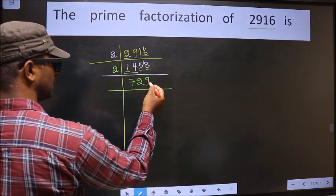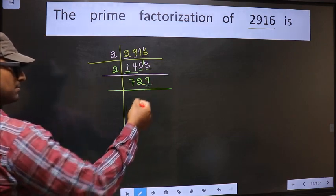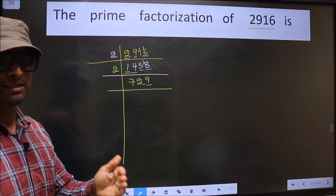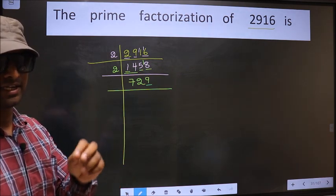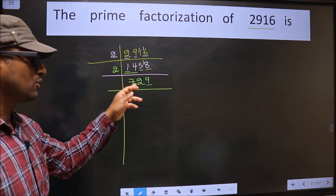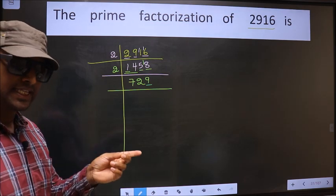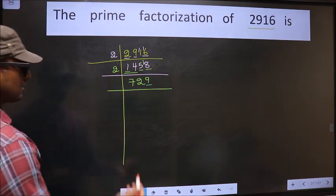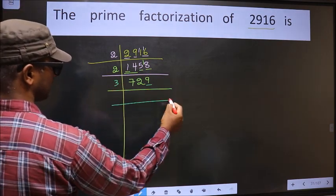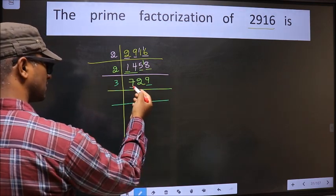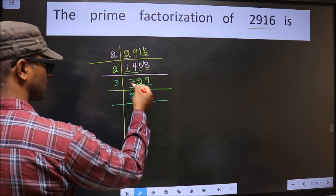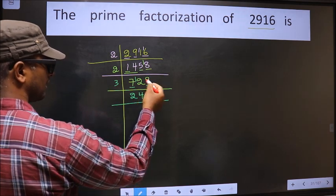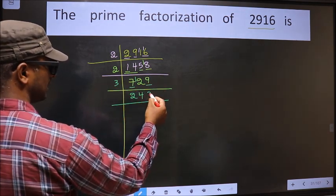Now for this number, the last digit is 9, which is not even. So this number is not divisible by 2. Next, prime number 3. To check divisibility by 3, we should add the digits — that is 7 + 2 + 9 = 18. Is 18 divisible by 3? Yes. So this number is also divisible by 3. So we take 3 here. The first number is 7. A number close to 7 in the 3 table is 3 × 2 = 6. 7 - 6 = 1, carried forward making it 12. When do we get 12 in the 3 table? 3 × 4 = 12. The next number is 9. When do we get 9 in the 3 table? 3 × 3 = 9.